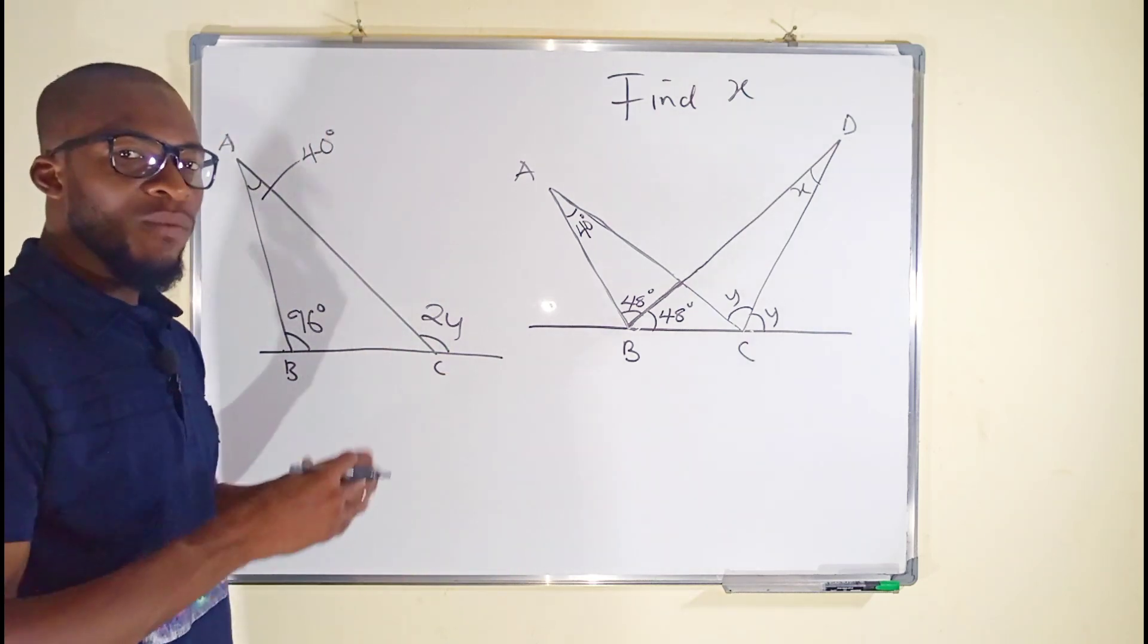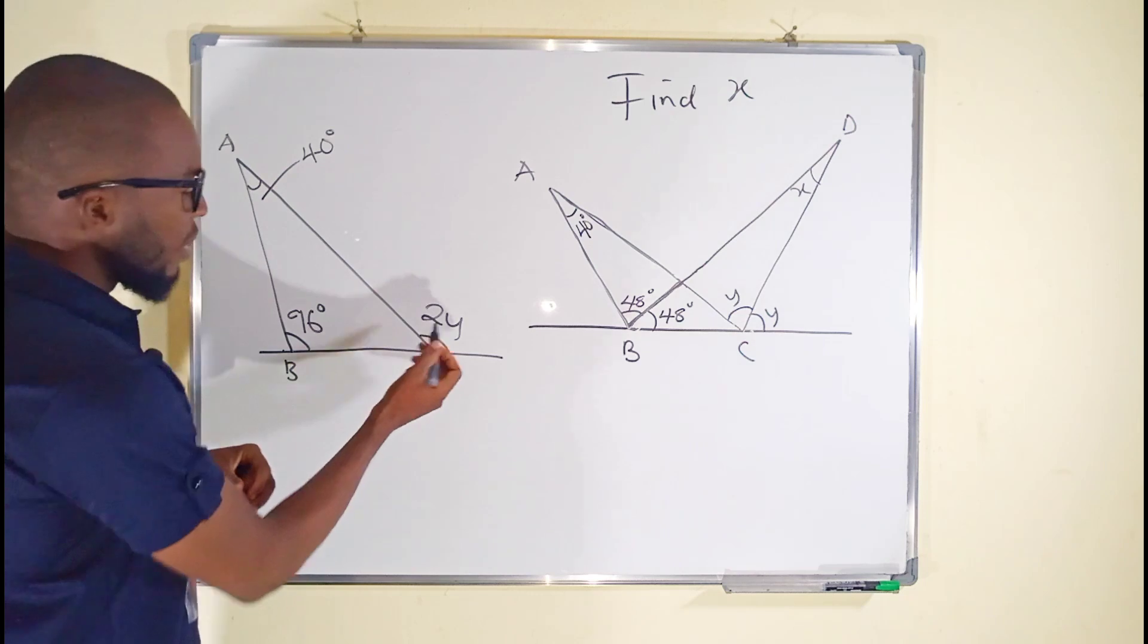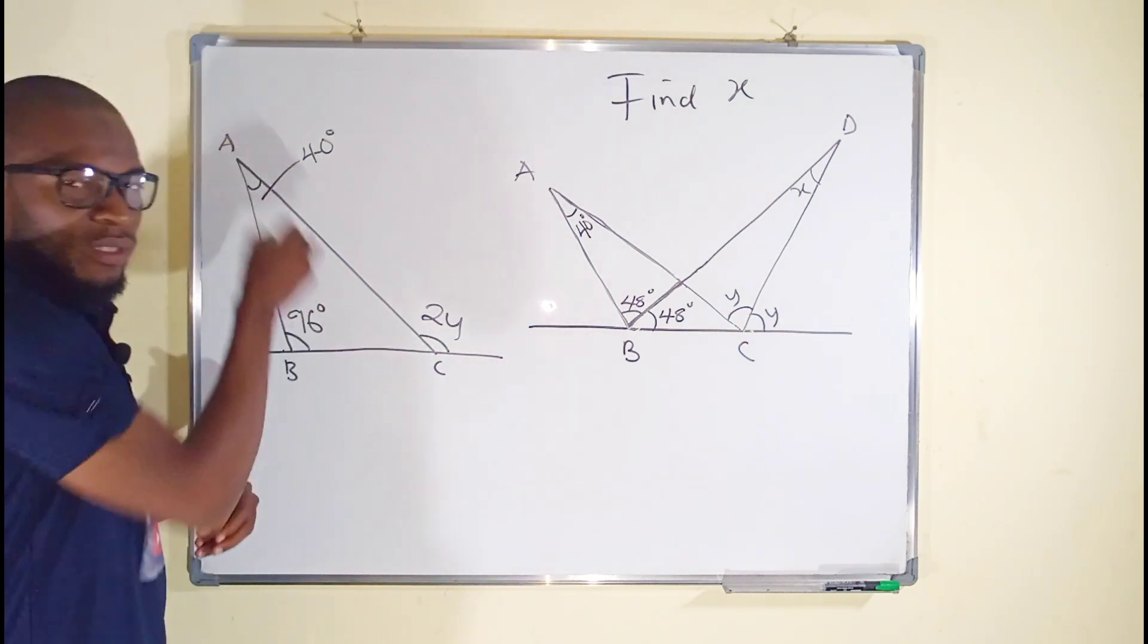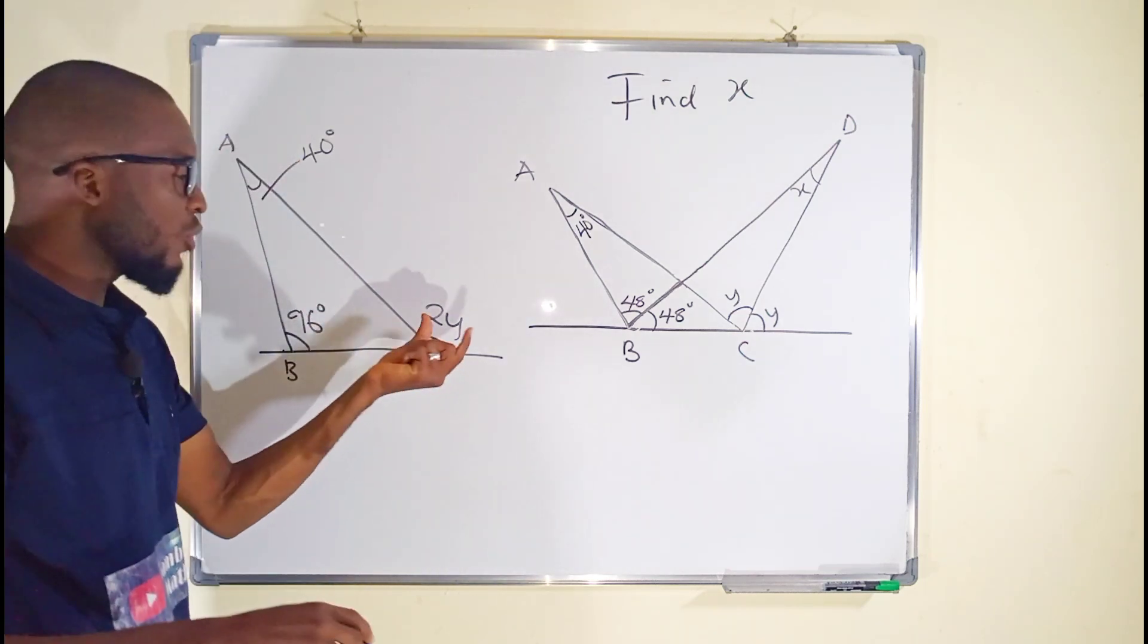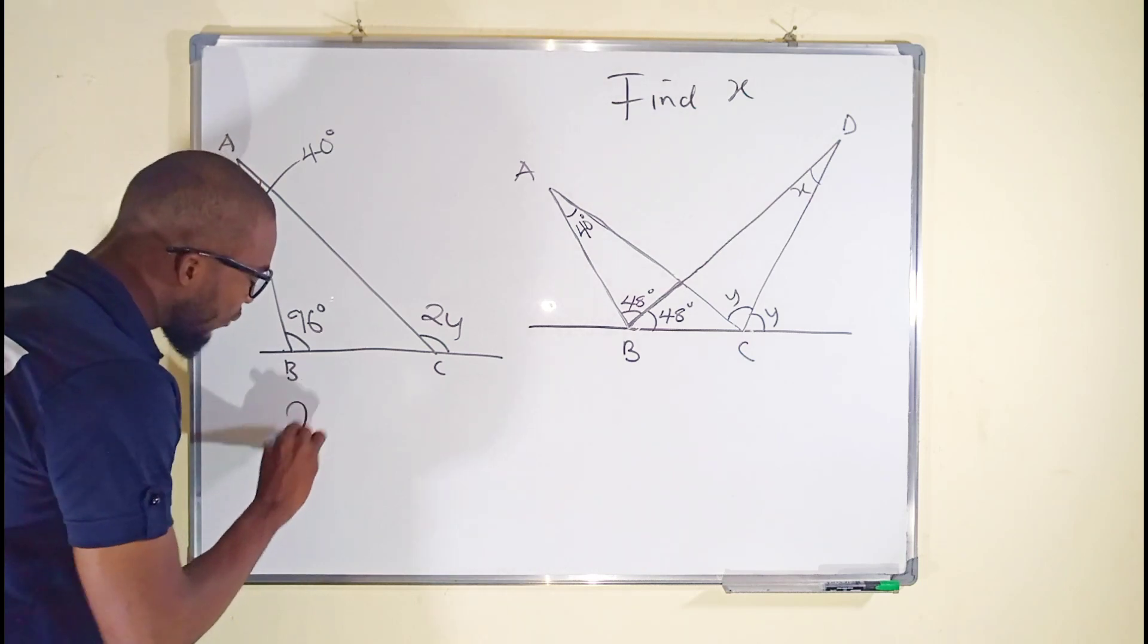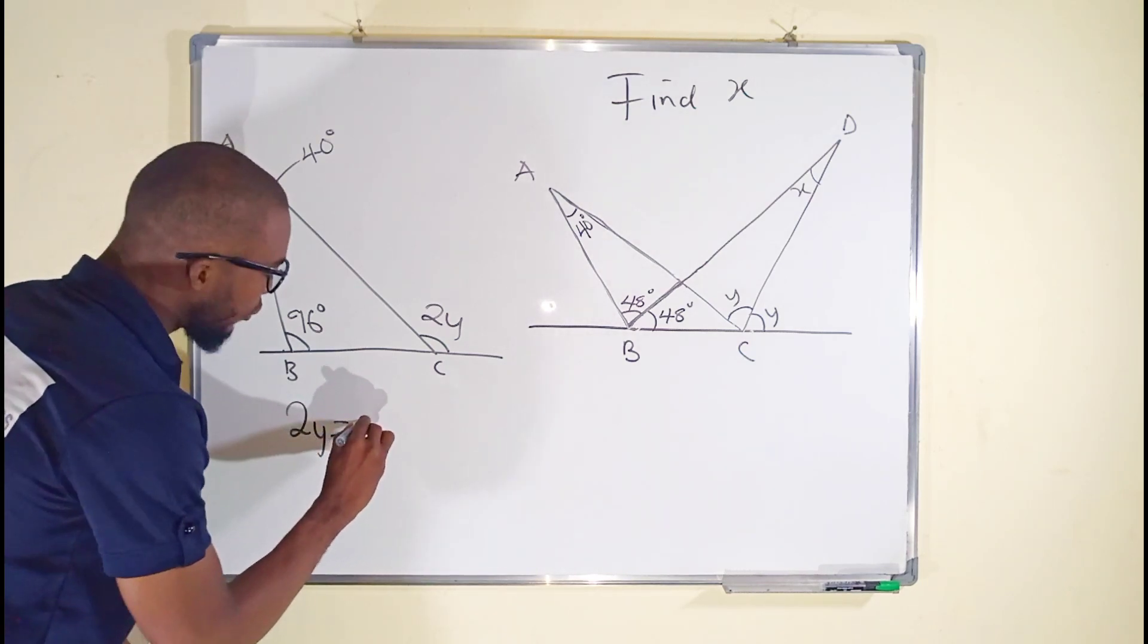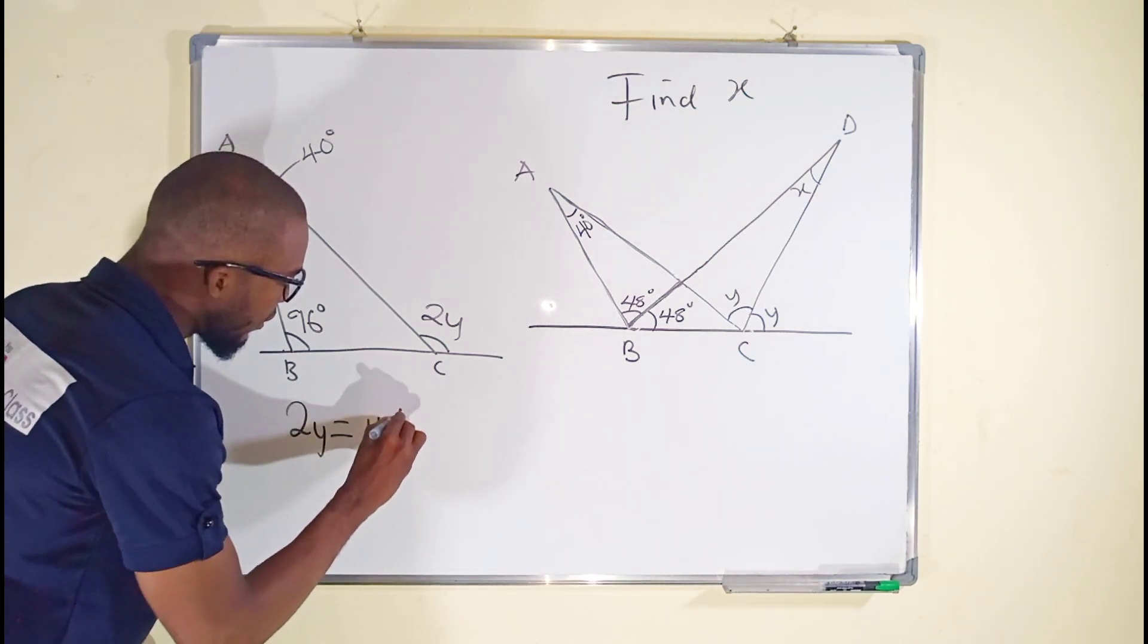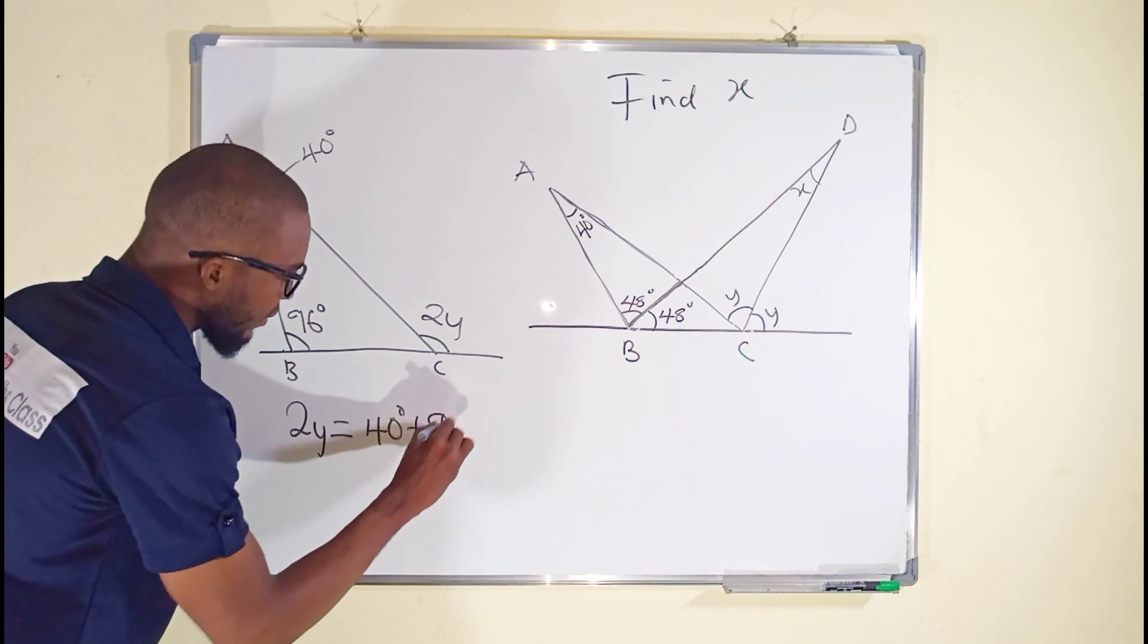This is interior, these are the two opposite angles. If you add them together you must get this two. So we have 2y equal to 40 degrees plus 96 degrees.